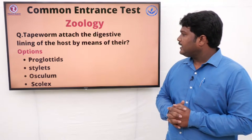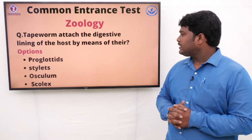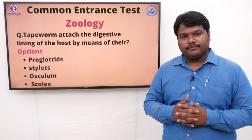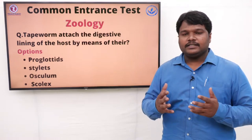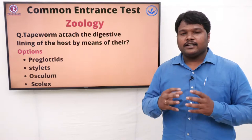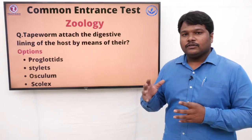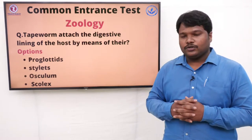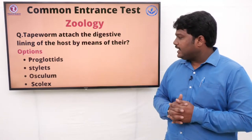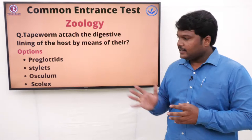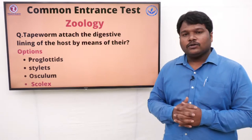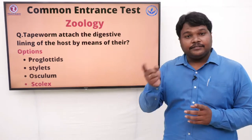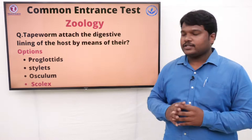Question 22: Tapeworm attaches to the digestive lining of the host by means of its. Tapeworms attach to the linings of the host — host is the one who lodges and can transmit infection. Options: A) Proglottids, B) Stylets, C) Osculum, D) Scolex. The right answer is scolex. With the help of the scolex, a specialized structure present in the tapeworm, it attaches to the digestive lining of the host.